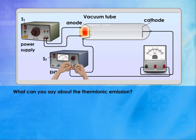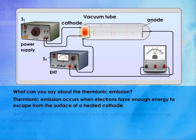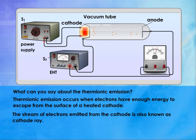Thermionic emission occurs when electrons have enough energy to escape from the surface of a heated cathode. The stream of electrons emitted from the cathode is also known as cathode ray.